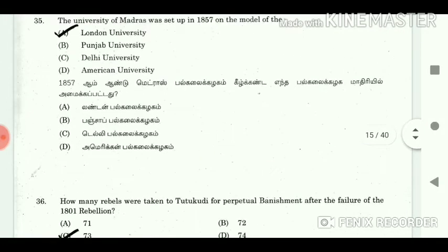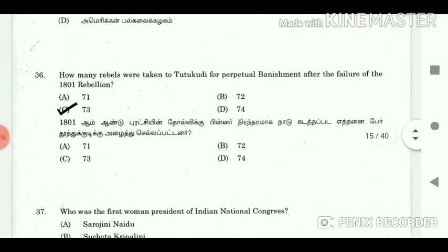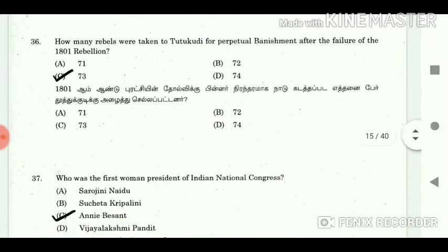35. The University of Madras was set up in 1857 on the model of the? Answer: London University. 36. How many rebels were taken to Tuticorin for perpetual banishment after the failure of the 1801 rebellion? Answer: 73.